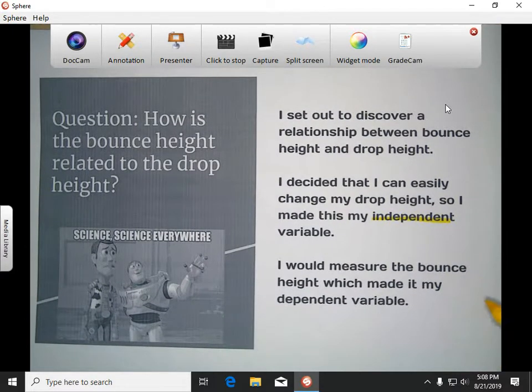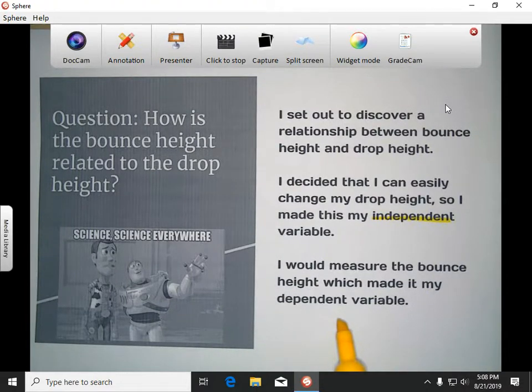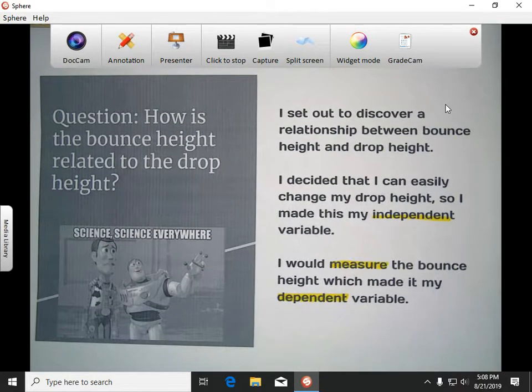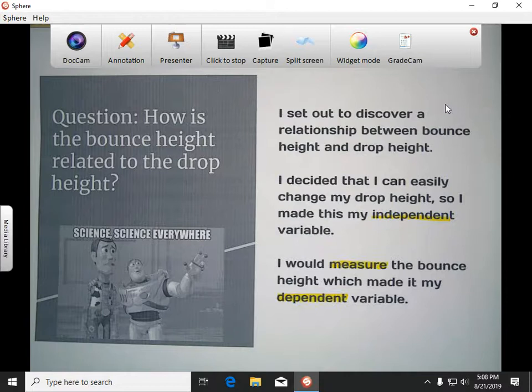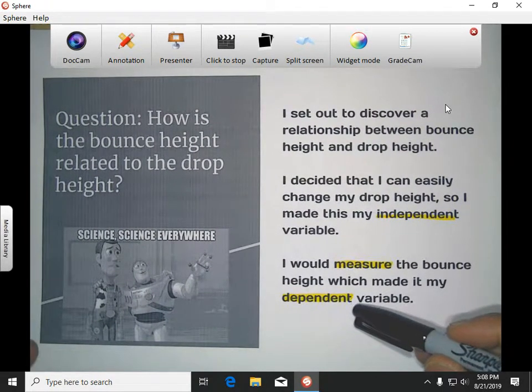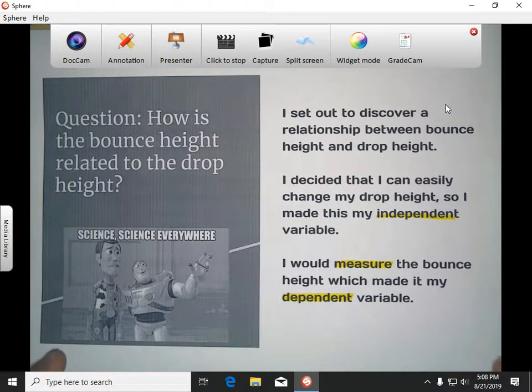Then the dependent variable would be the bounce height. So the dependent variable is usually the thing that you measure, meaning you're measuring it to figure out what happens to it. So you would try to measure and see how high does the ball really go. So I'm going to tell you, these two terms are super important, independent variable and dependent variable.